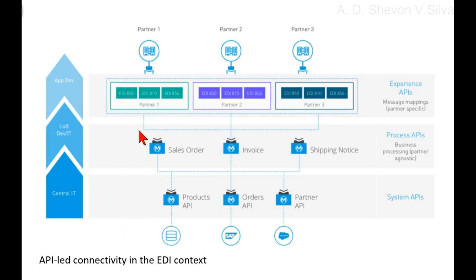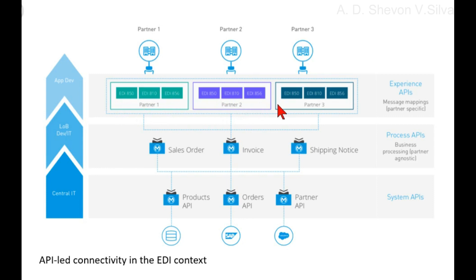In the diagram, you can see Partner 1 with EDI 850 and EDI 856, Partner 2 with EDI 850, EDI 810, and EDI 856, and Partner 3 with EDI 850, EDI 810, and EDI 856. Partner 1 interacts with the Partner 1 Experience layer, Partner 2 interacts with the Partner 2 layer, and Partner 3 interacts with the Partner 3 layer.